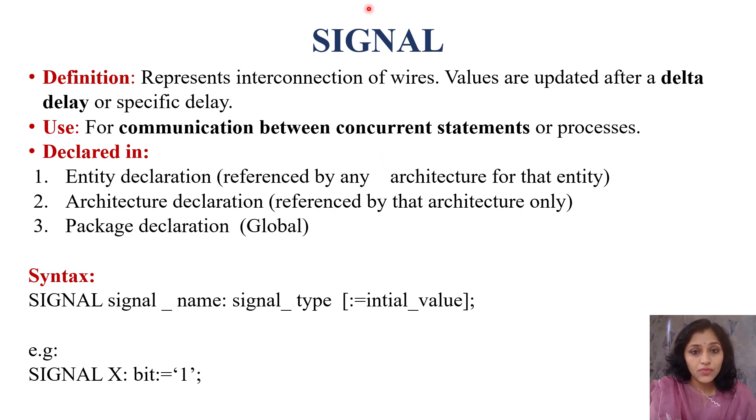Where we declare signals? We can declare signals in entity declaration, in architecture declaration, and in package declaration. For single entity, we can write multiple architectures. When we declare our signals in entity declaration, they can be used in any architecture associated with that entity. In architecture declaration, they are referenced by that architecture only. And when we declare our signals in package declaration, then they are global.